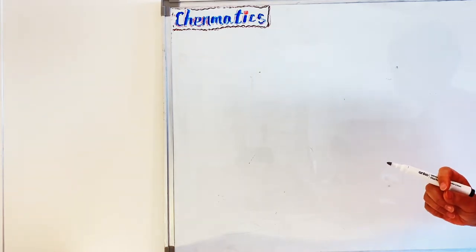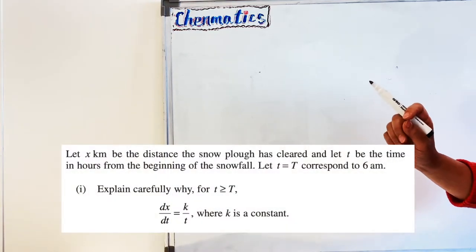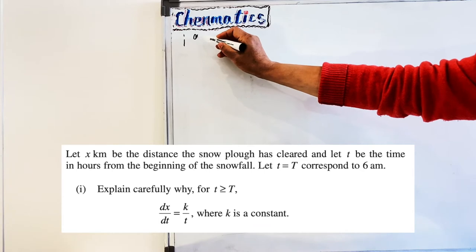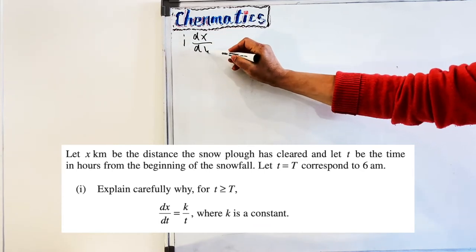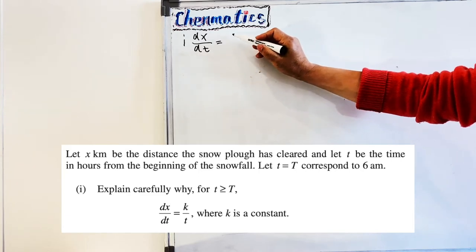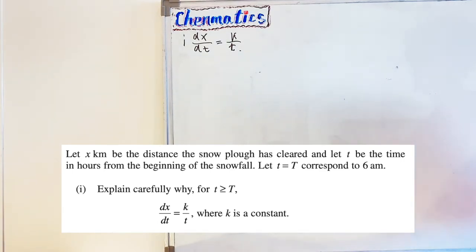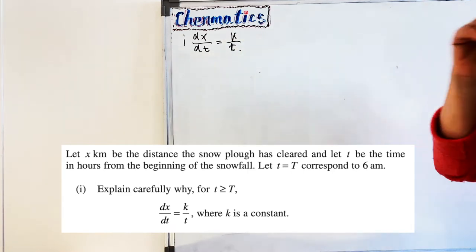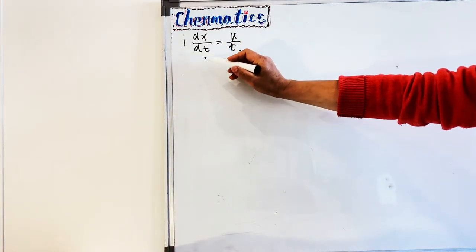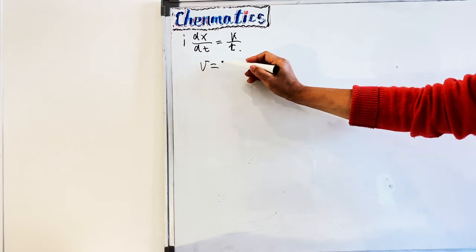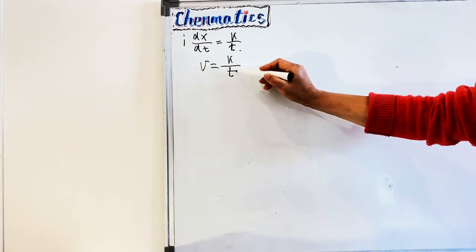The first question is proving that dx/dt equals k over t, where k is a constant. Firstly, we need to know what dx/dt means: x is the displacement of the snowplow clearing snow, and the derivative of displacement with respect to t means the velocity of the snowplow — so dx/dt equals v equals k over t.